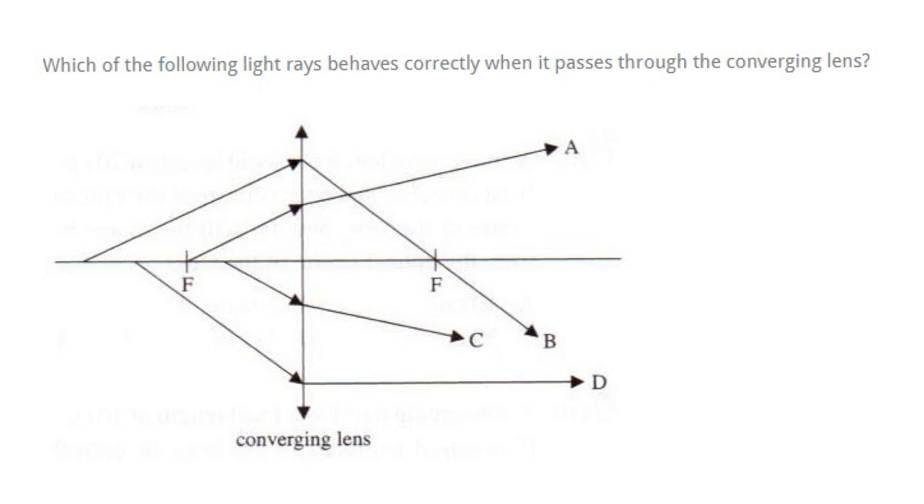Let's take a look at ray A here. Ray A passes through F. As mentioned, if it passes through F after passing through the converging lens, it must be parallel to the principal axis. That means A will be wrong.